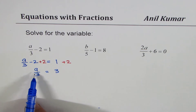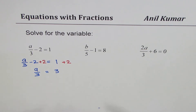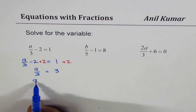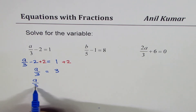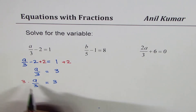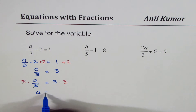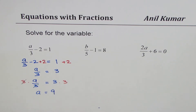We still need to find a. We don't want this 3 which is being divided. To get rid of this 3, we multiply by 3 on both sides. When you do that, the 3's cancel and you get a equals to 3 times 3, which is 9.